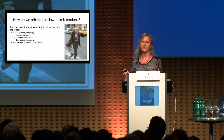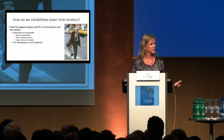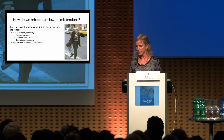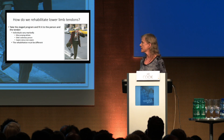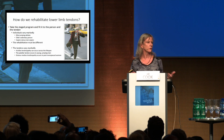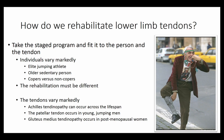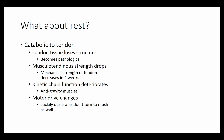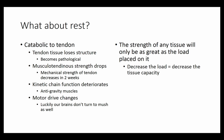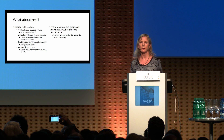We take that stage program and fit it to the person and the tendon. Individuals differ markedly — we have elite jumping athletes and sedentary people who don't do very much activity, so rehabilitation must be different. Our tendons also vary markedly: the patellar and Achilles tendon are actually very different, and the gluteal tendon is a disease of post-menopausal women whereas the Achilles tendon can occur across the lifespan. What about rest? It's a disaster. Do not rest tendons. The tendon loses its structure, we lose musculotendinous strength, we lose kinetic chain function, and we get changes in the brain — a massive unloading effect. The strength of a tissue will only be as great as the load we place on it.